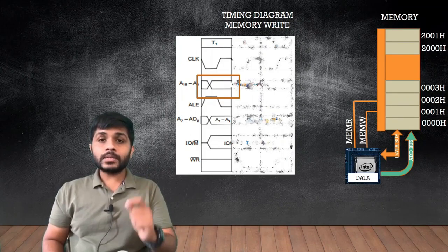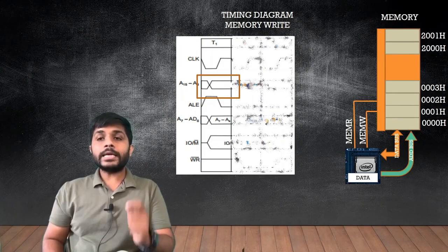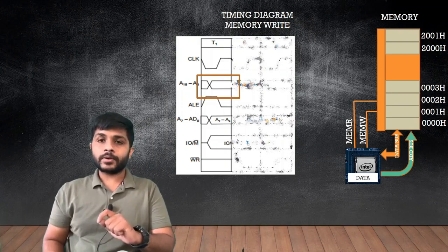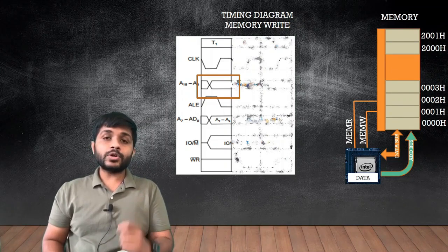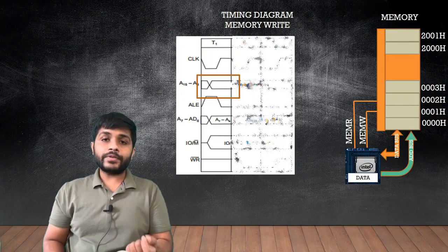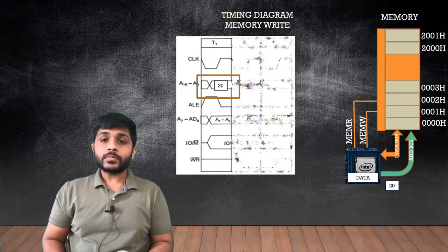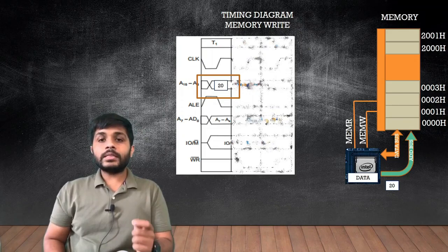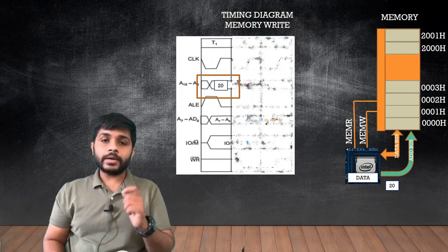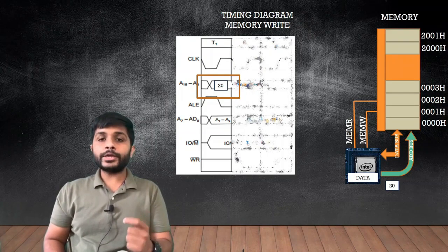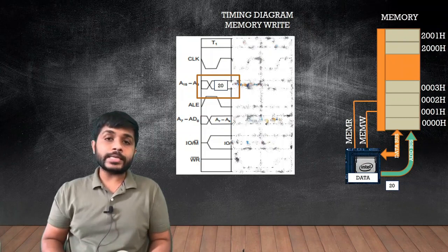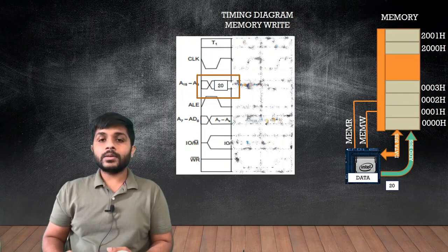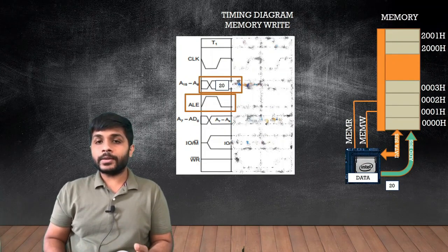However, the processor cannot directly put the lower address value 00 in AD0 to AD7, because AD0 to AD7 must first be converted into A0 to A7. So the processor will put the higher order address 20 in A8 to A15. To put 00 in AD0 to AD7, it must first be converted into A0 to A7, and for that the processor will use the ALE signal.